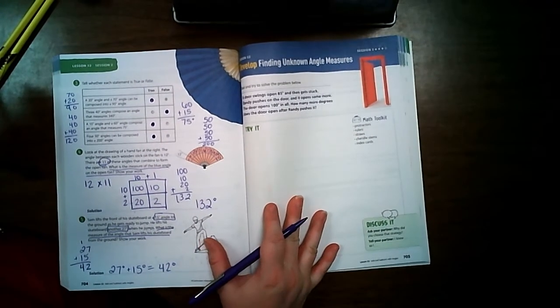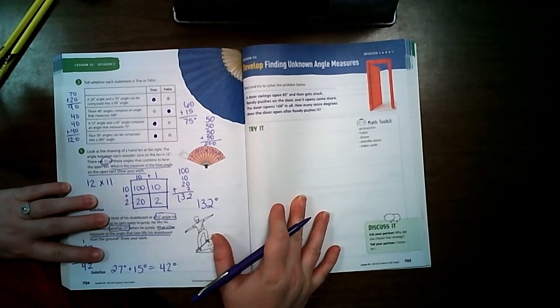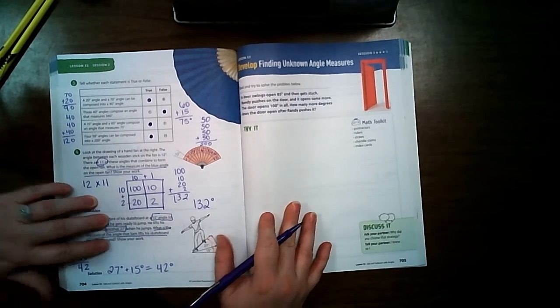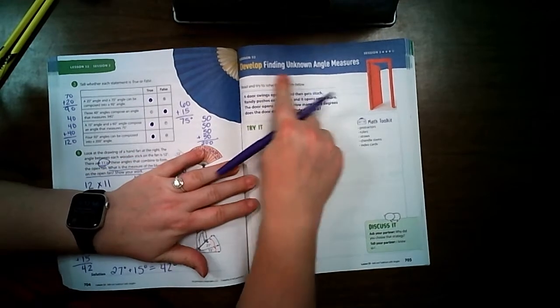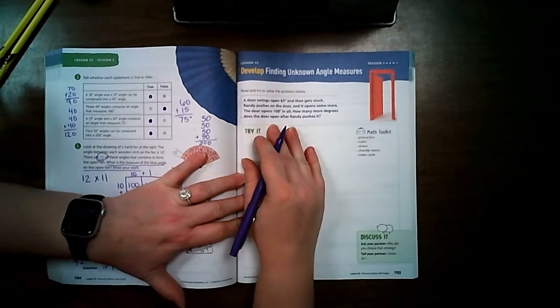Welcome back students, this is lesson 32 session 3. We're on page 705 of our volume 2 math book. Today we're going to be working on finding unknown angle measures, so this is going to be like subtracting to find the measure of an angle.